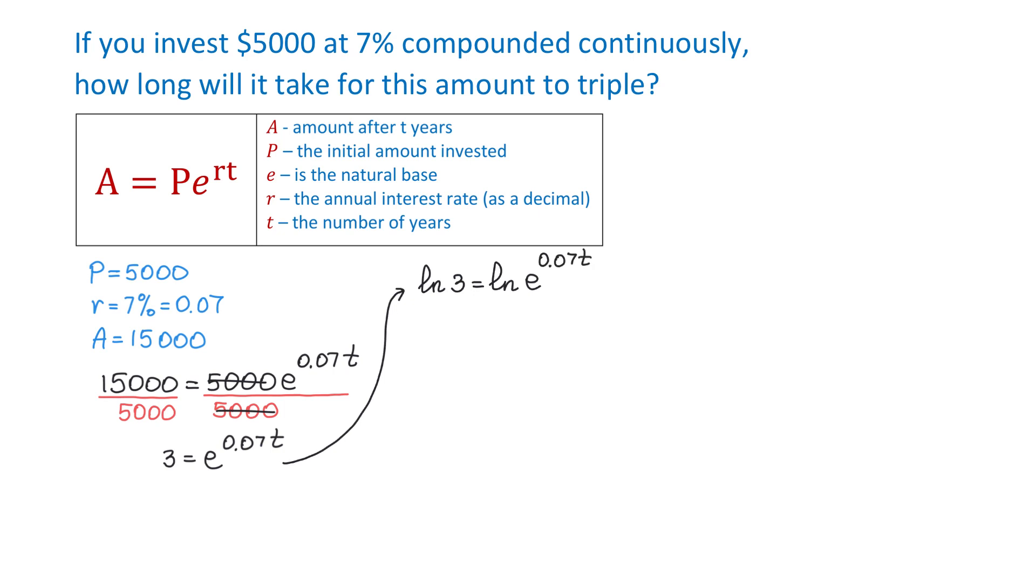And now we can use the power rule to move the exponent 0.07t in front of the logarithm. Then we will have the natural logarithm of 3 equals 0.07t multiplied by natural logarithm of e.